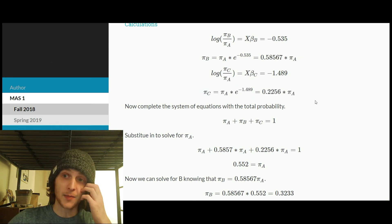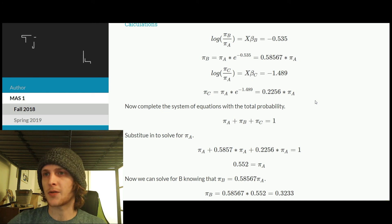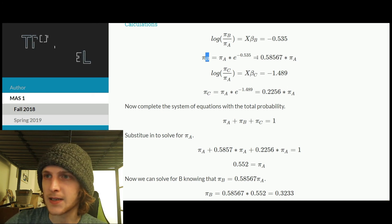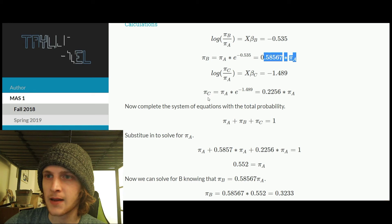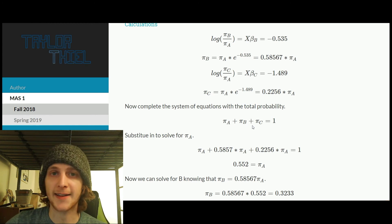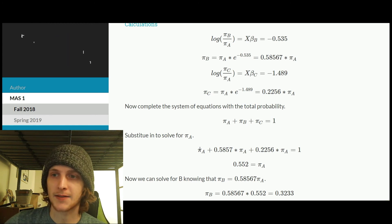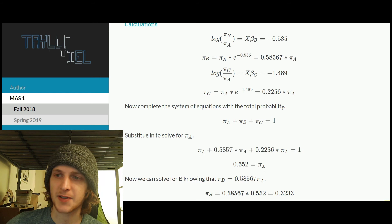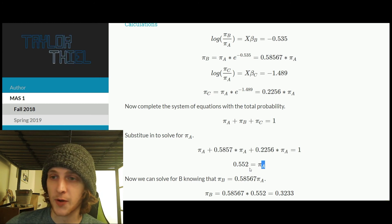And then the final step is just to say we know that B is 58% of A. And we know that C is 22% of A. And then finally, we know that A, B, and C, all those probabilities, need to sum to 1. And so we can just sub in what we prepped such that we get everything in terms of the probability of A. And that is 0.552.